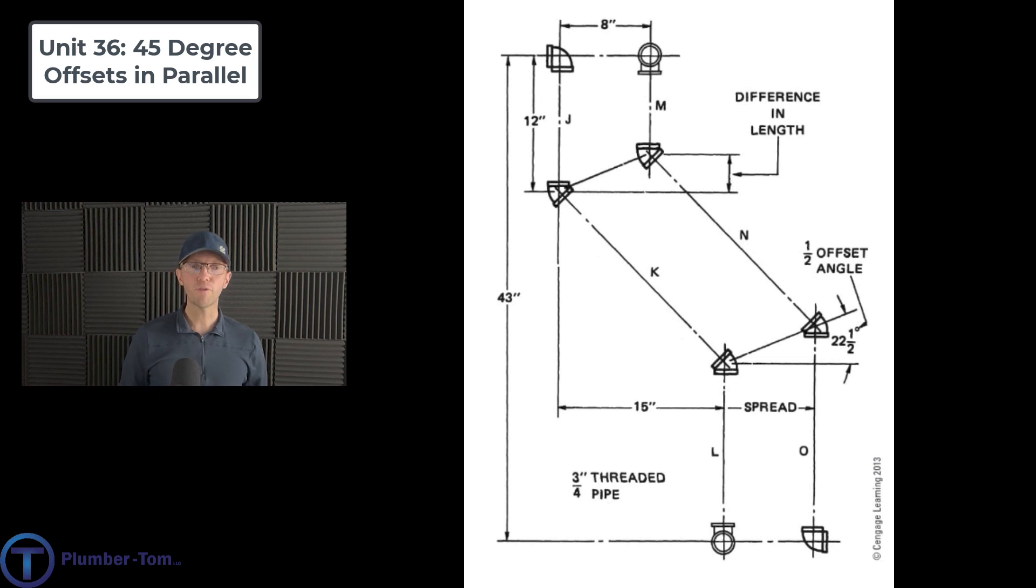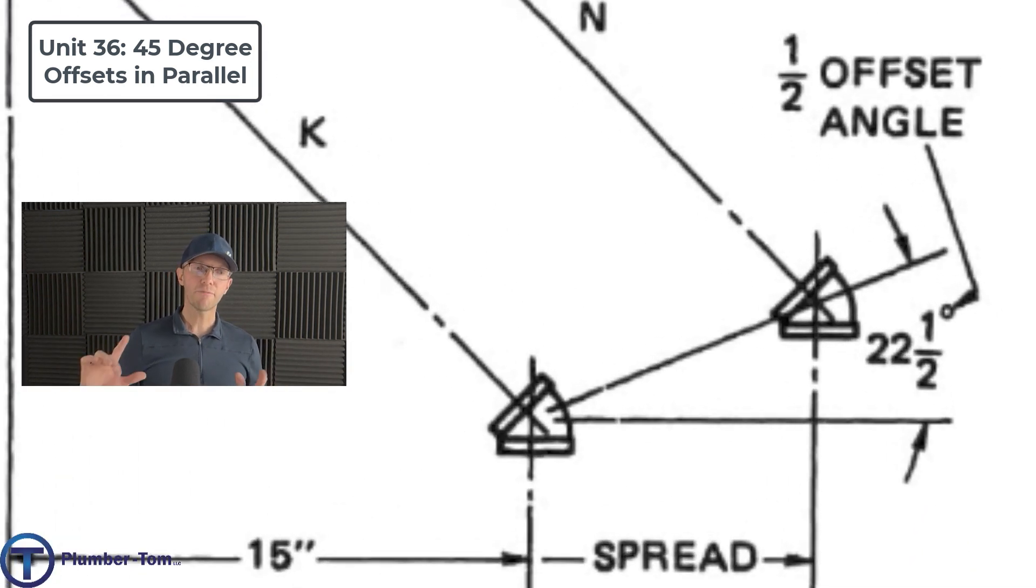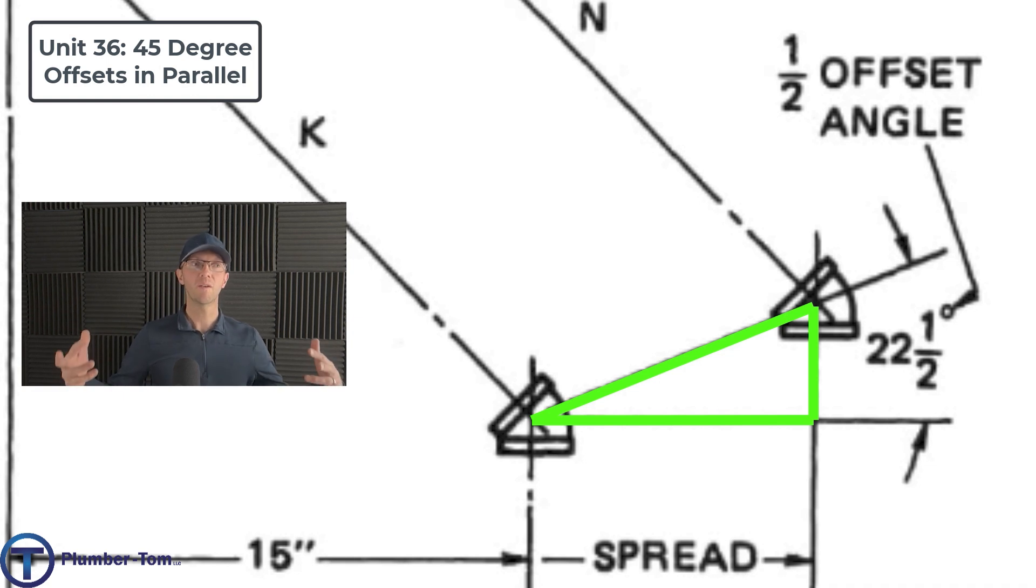This diagram points out for us that this alignment of pipe automatically creates a 22 and a half degree triangle. Now think back to Unit 35. There may have been times during that unit where you were going where in the world did you think up that triangle? How do you even know to use a 22 and a half degree triangle? And that's legit. There's probably some things that even in my explanations were just given to you, right? But let me point this out that when you arrange the pipes in this way and you have an even spread and you're using 45 degree fittings, this automatically happens. It just exists.